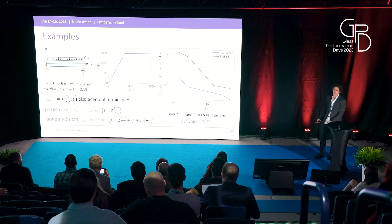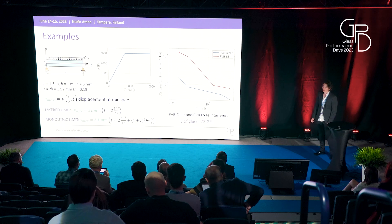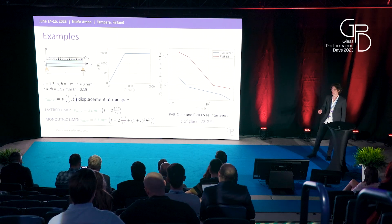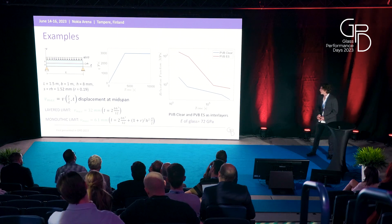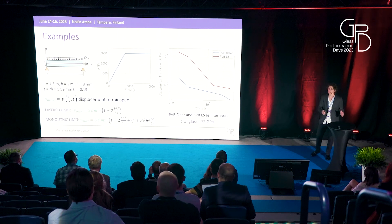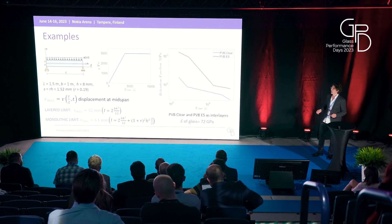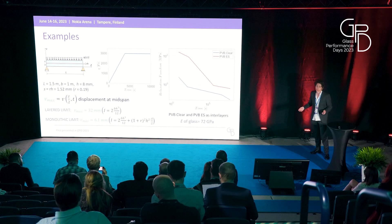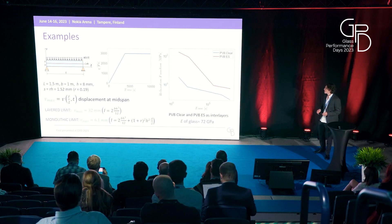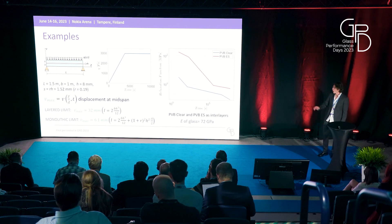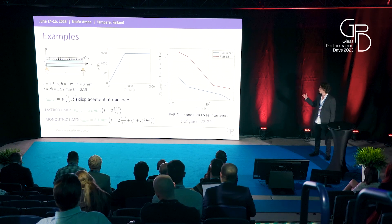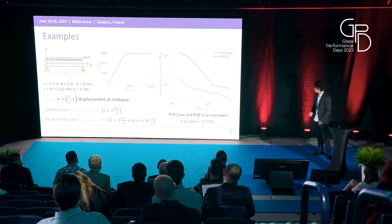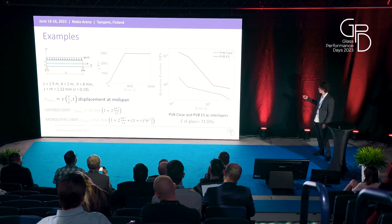Here are the data used to solve our problem, which can be changed as needed. The solution has been calculated for two different interlayers: PVBClear and PVBS. It is important to mention the two limits: the layered limit, where there is no coupling between the glass plies, and the monolithic limit, where there is full coupling. Comparing our results against these limits allows us to understand the influence of the interlayer.